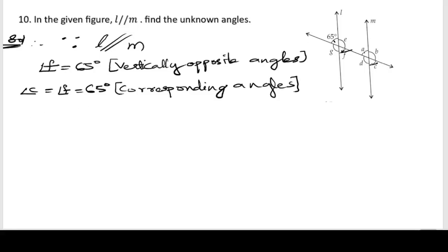Now we have F and C. In front of C we have A, so angle A is equal to 65 degrees because these are also corresponding angles.